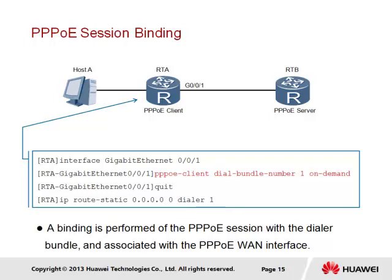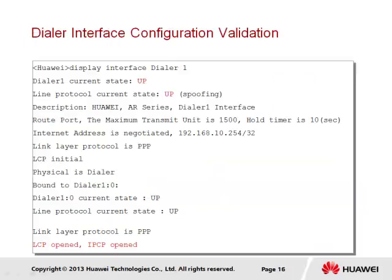If the on-demand parameter is not used, the PPPoE connection may be used as the primary route. Following configuration of the dialer interface, the 'display interface dialer' command can be used to view the current status of the dialer interface, which is now bound to interface GigabitEthernet 0/0/1.